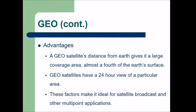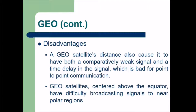Advantages of GEO: the satellite's distance from earth gives it a large coverage area — around 40%, almost a fourth of the earth's surface. GEO satellites have a 24-hour view of a particular area since they are essentially stationary relative to a user, making them ideal for satellite broadcast and multipoint applications. Disadvantages: the distance causes a comparatively weak signal and a time delay, which is bad for point-to-point communication. Also, GEO satellites centered above the equator have difficulty broadcasting signals to polar regions.